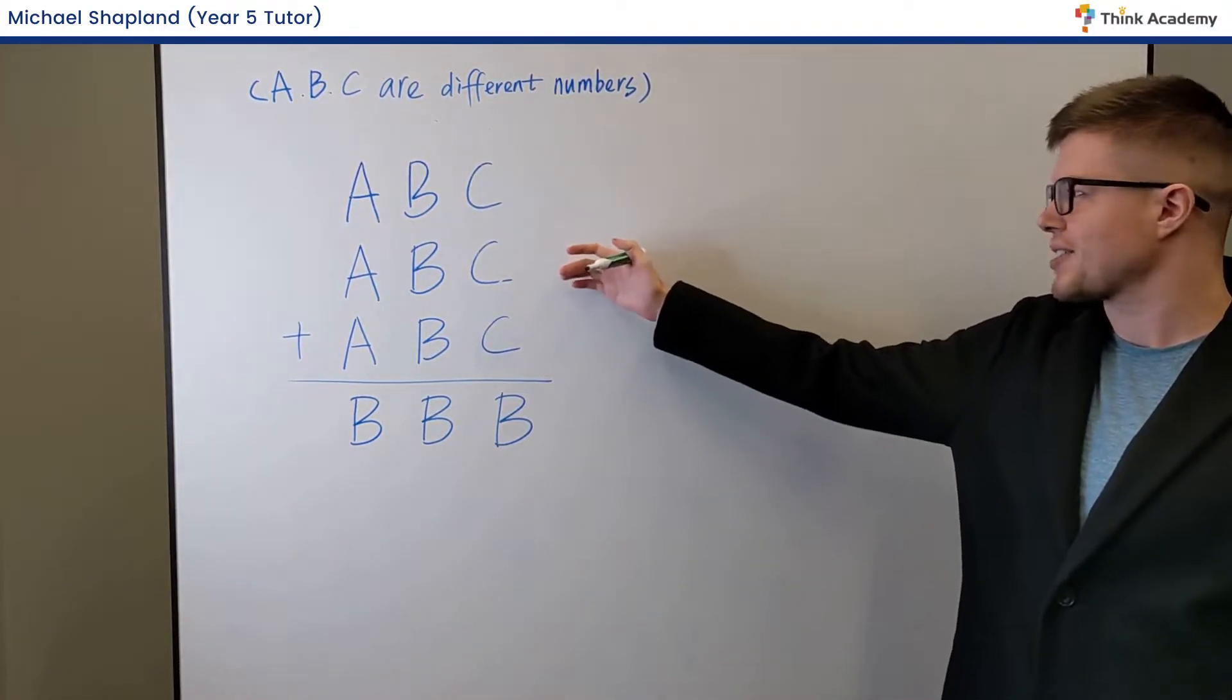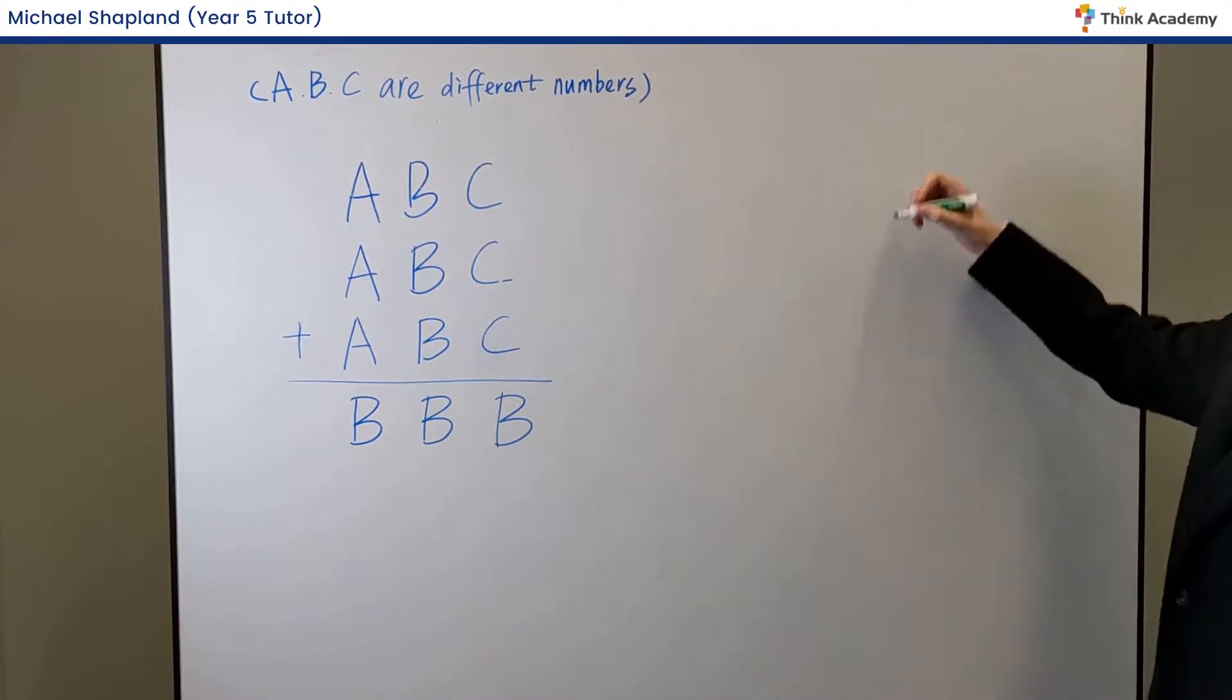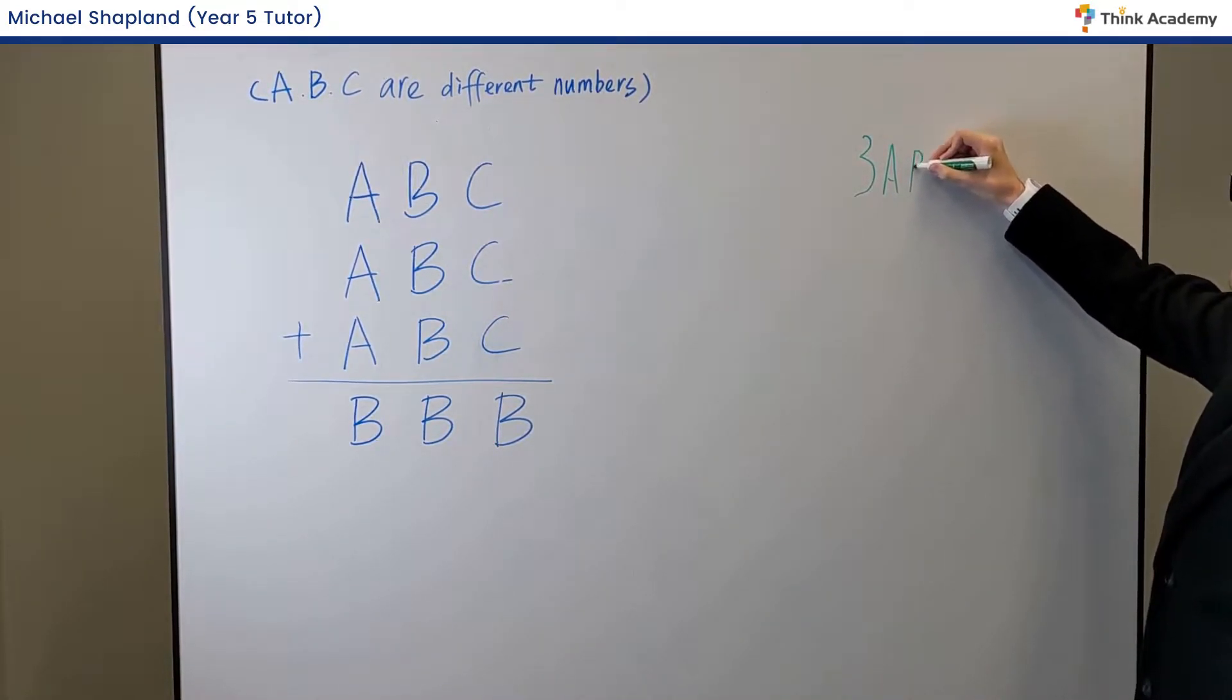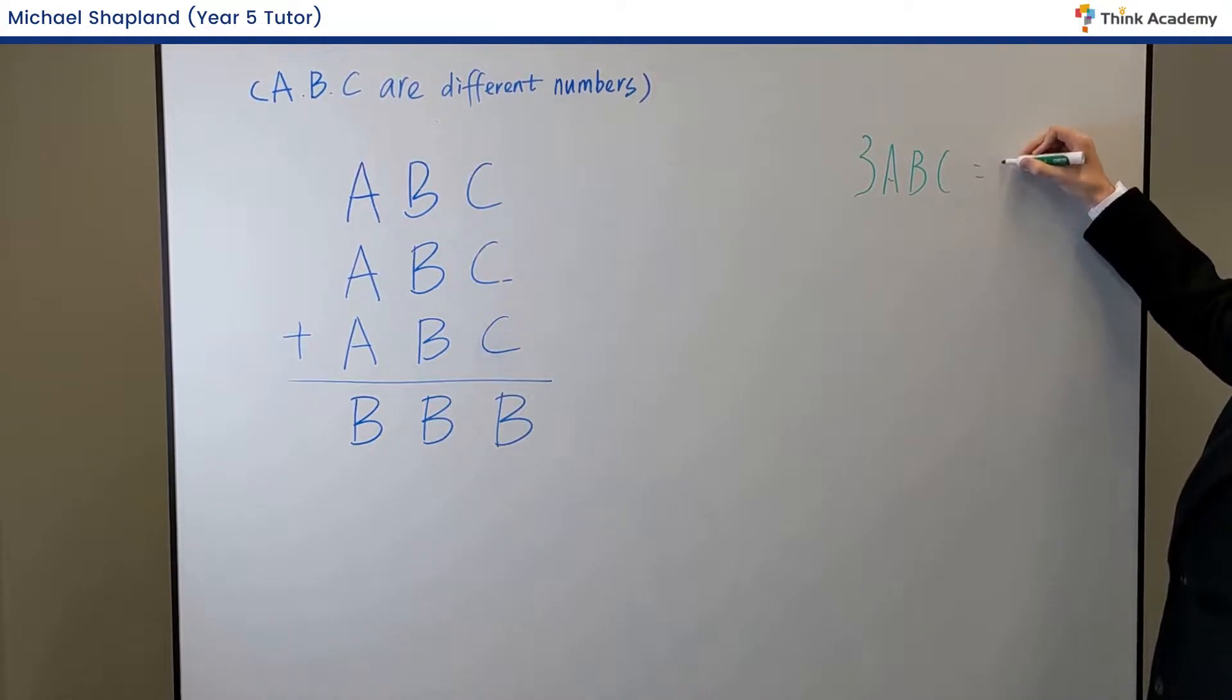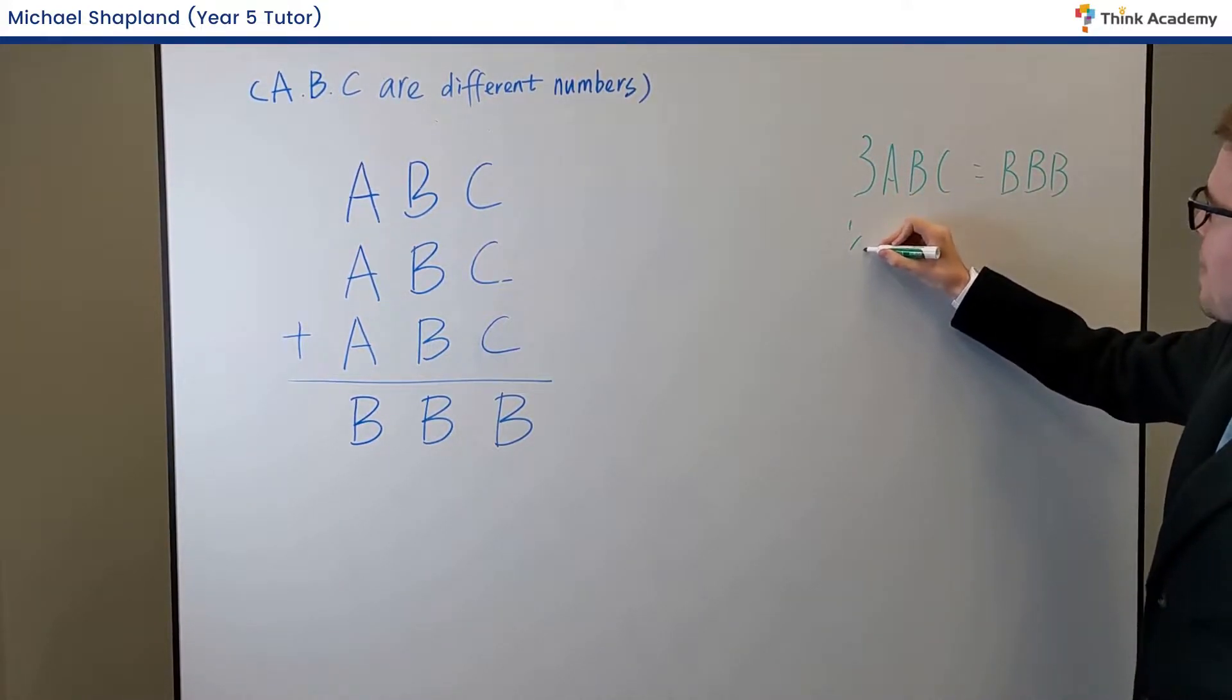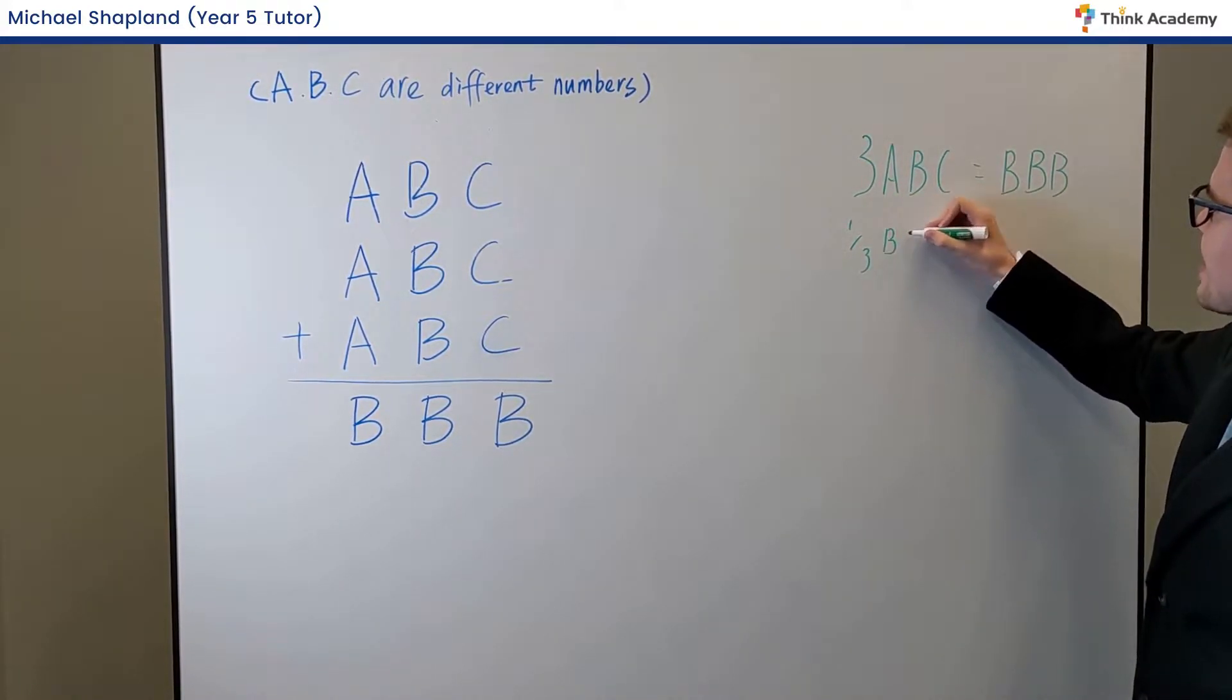But actually, if we stick to two key facts about this, straight away we know that 3ABC must equal BBB, this three-digit number here. And we also know that a third of BBB must be ABC.